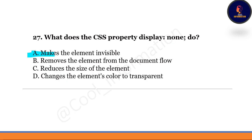Next question: what does the CSS property display none do? Option A is makes an element invisible. Option B is removes the element from the document flow. Option C is reduces the size of an element. Option D is changes the element's color to transparent. The correct option is option B — it removes the element from the document flow.